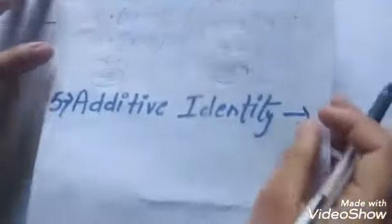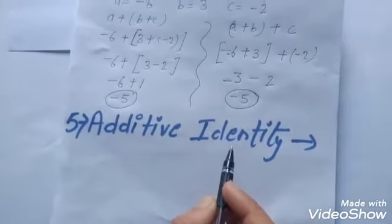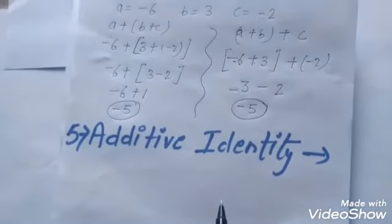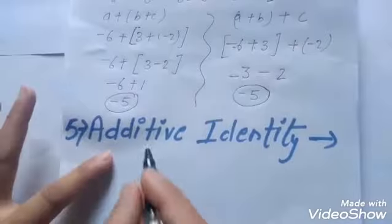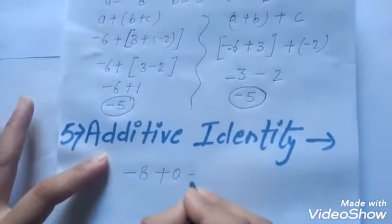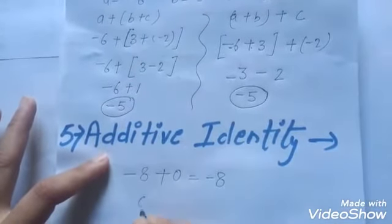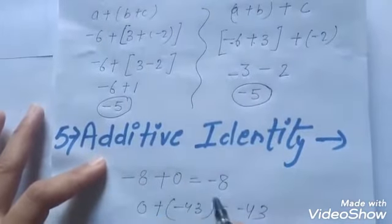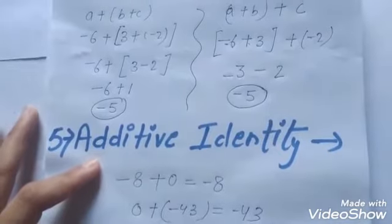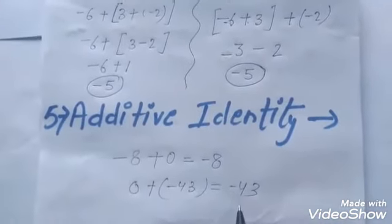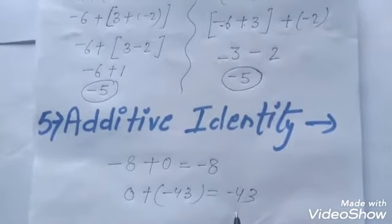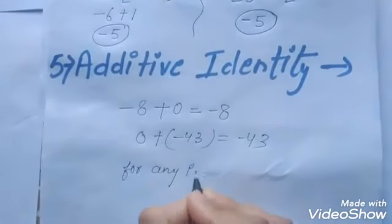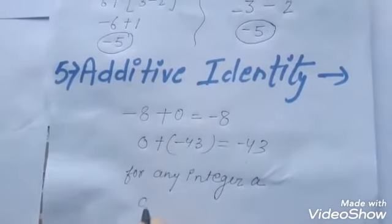The next property is additive identity. When we add zero to any whole number, we get the same whole number — zero is the additive identity for whole numbers. Is it an additive identity for integers also? Take some examples: minus eight plus zero is minus eight, and zero plus minus forty-three is minus forty-three. This shows that zero is the additive identity for integers.